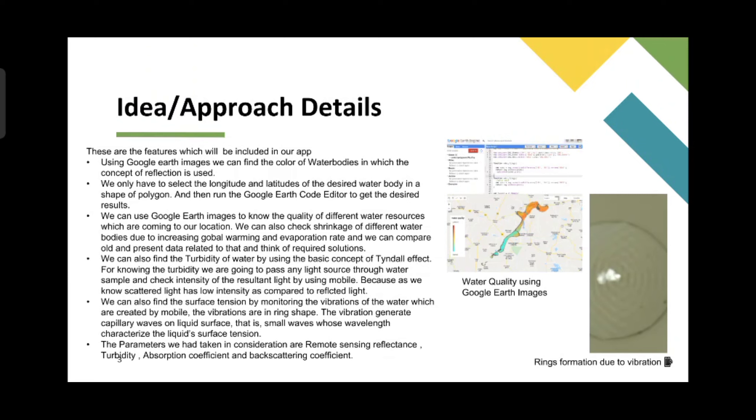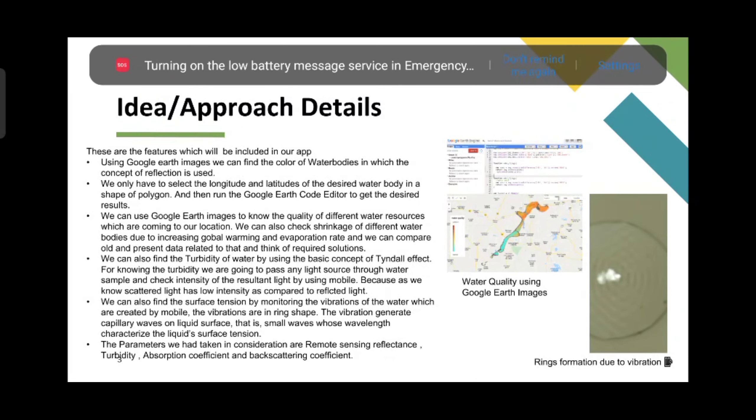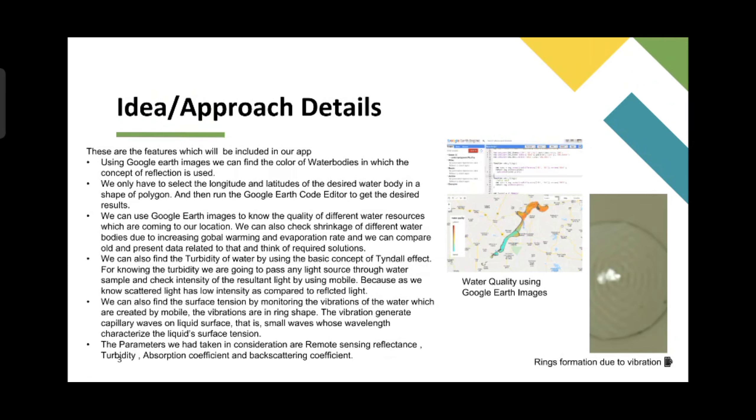We can use Google Earth images to know the quality of different water resources which are coming to our local location. We can also check shrinkage of different water bodies due to increasing global warming and evaporation rate, and we can compare old and present data related to that and think of required solutions.